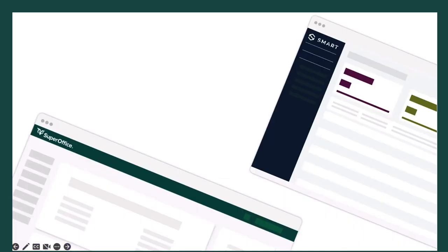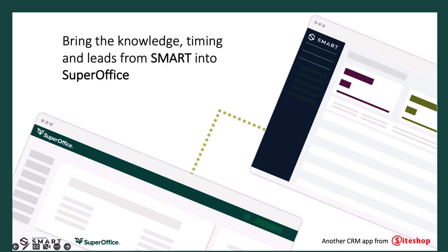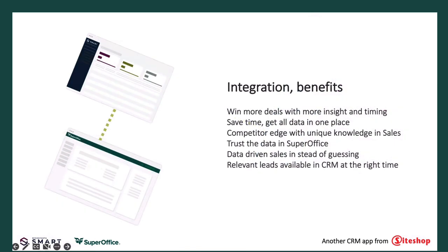How can we combine this brilliant data in Smart with our sales and marketing workflow in SuperOffice? With the BigFactor Smart app, of course, created by Siteshop. Integrating Smart with SuperOffice will help you offer the right products at the right time to the right customers. You will get much better conversion rate by getting relevant leads only. Your sales team will know everything that's going on and eliminate all the white spots.